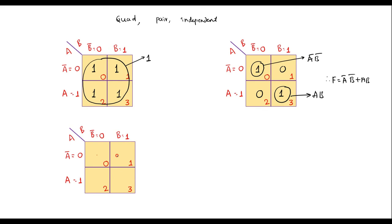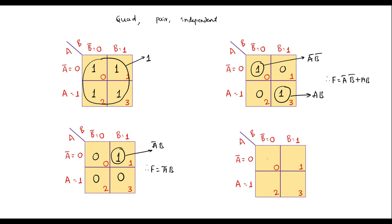If only one cell has a 1, we do independent grouping. For example, if only cell 1 has a 1, its value is A-bar·B, so F = A-bar·B. Similarly, suppose cell 1 and cell 2 each have a 1 — quad is not possible, pair is not possible, so we go for independent cells. Cell 1 gives A-bar·B, and cell 2 gives A·B-bar. Therefore F = A-bar·B + A·B-bar.